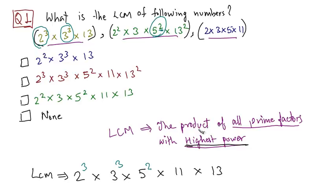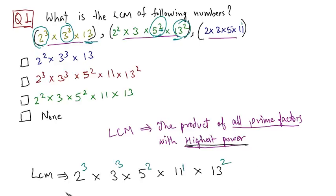We have 5 raised to 2 multiplied by 11. The highest power of 11 is 1 because there is only one 11 here, so 11 raised to 1 multiplied by 13. The highest power of 13 amongst these two numbers is 13 squared, so we have 13 raised to 2. This is the LCM of these three numbers, and hence the right answer is option B.